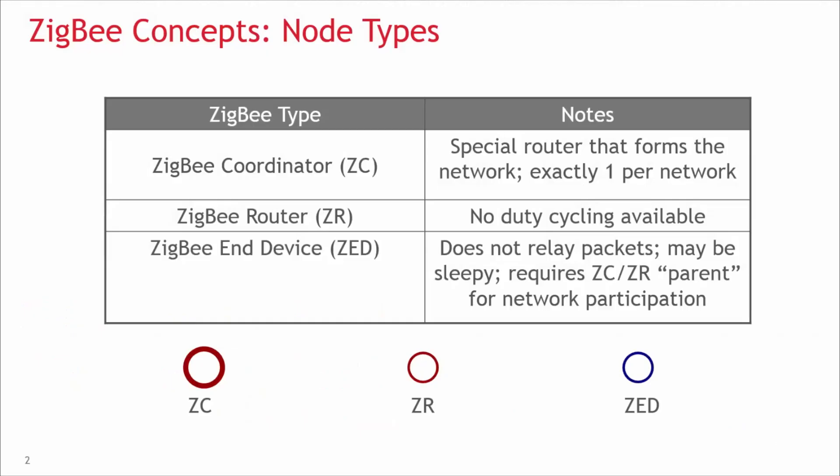Let's start with node types. Zigbee has three types of basic node types: the Zigbee coordinator, or ZC, the Zigbee router, abbreviated as ZR, and the Zigbee end device, the ZED.